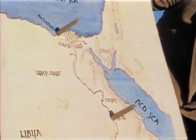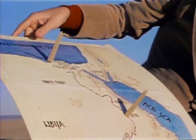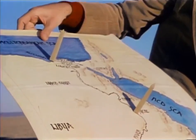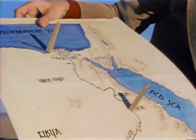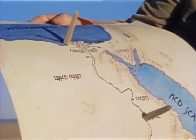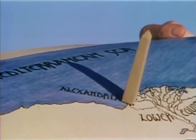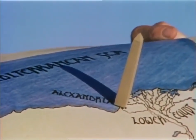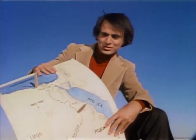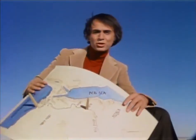If the shadow at Syene is a certain length and the shadow at Alexandria is the same length, that also makes sense on a flat earth. But how could it be, Eratosthenes asked, that at the same instant there was no shadow at Syene and a very substantial shadow at Alexandria? The only answer was that the surface of the earth is curved.